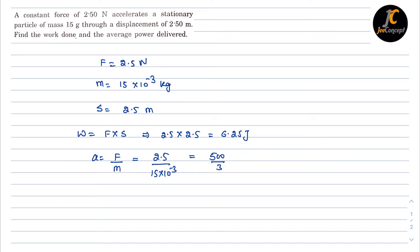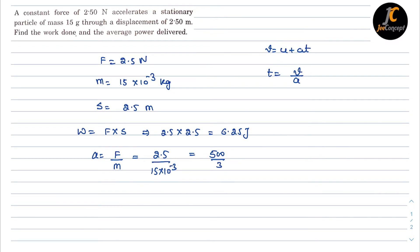Now to get the time, we know that V equals U plus AT. T is given as V by A because U is zero in this case. Now to get the velocity we can use the equation 2AS equals V squared minus U squared.